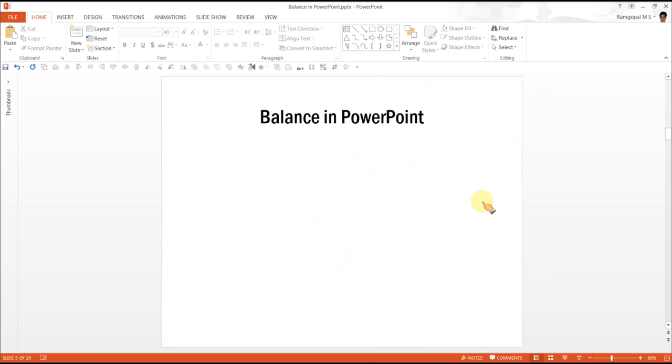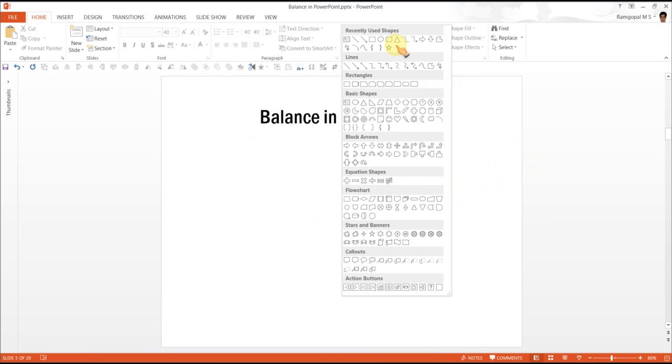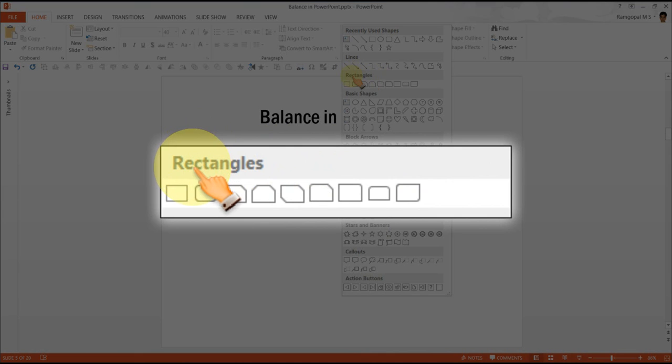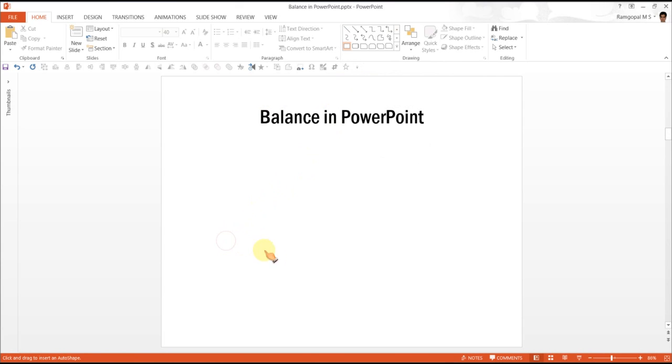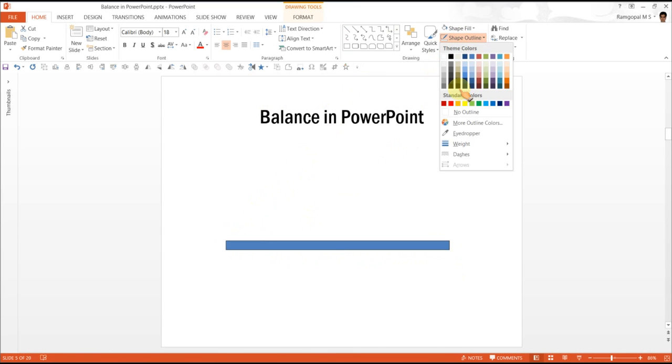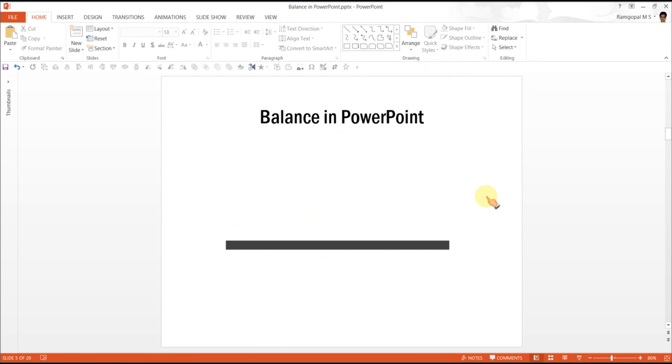Let us create each one of them using auto shapes. The first step is to go to rectangles in auto shapes menu and pick up this basic rectangle shape and draw the plank. Your plank is ready. You can remove the outline and have the color to be black. We are done with the plank.